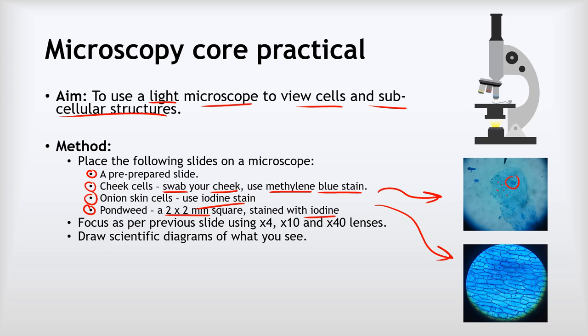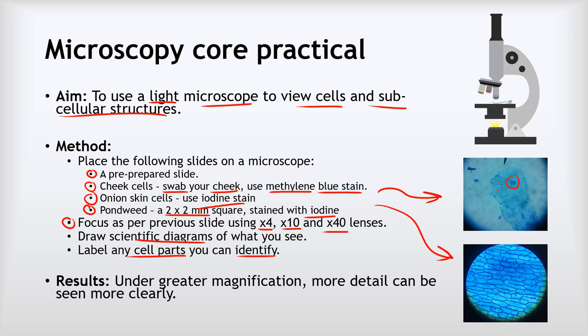Now what we did then was we focused each of our slides using the method outlined on the previous slide and we used the x4, the x10 and the x40 lenses and we drew scientific diagrams of what you could see. Finally making sure we labelled any cell parts that we could identify, and for the most part that was really just the nucleus, the cytoplasm and in the case of the onion cells the cell walls as well. In terms of results then what we should have seen was that under greater magnification we could see more detail more clearly.